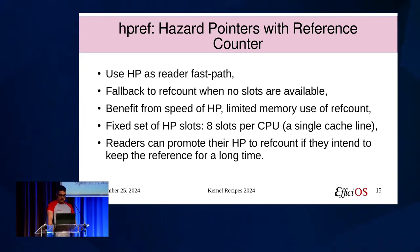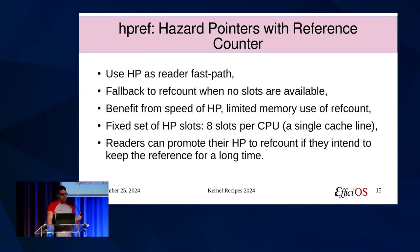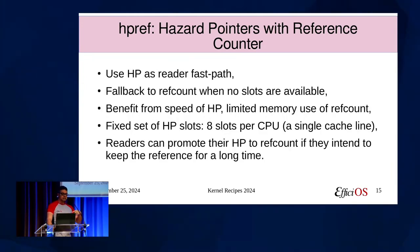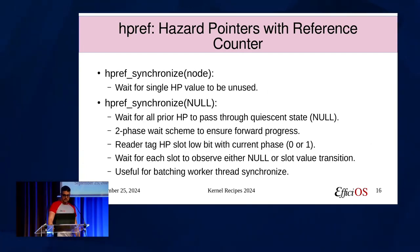This implementation is about 200 lines of code, really compact and fast. The trick is that readers can also promote their hazard pointer to ref count if they intend to keep the reference for a long time. The idea is we should not run out of hazard pointer slots if users of this API behave nicely. If they don't, when the last slot is taken, I use it as an emergency slot — only used by the API to grab a hazard pointer reference to the object and transform it to ref count, so it's always free and available.